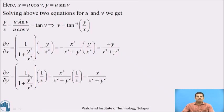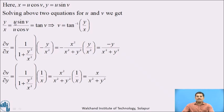Our next aim is to find the Jacobian of uv with respect to xy. For this, we must express u and v as functions of x and y by solving the two equations. Consider the ratio y/x = u·sin(v) / u·cos(v); the u cancels and sin(v)/cos(v) = tan(v). Operating tan inverse on both sides gives v = tan⁻¹(y/x).